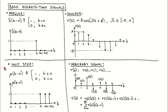The digital unit step is denoted by mu with argument k minus n, where k is again the discrete time index and n is a constant. It is defined as 1 for all time values greater or equal than n, and 0 everywhere else. A plot of the unit step is shown here.